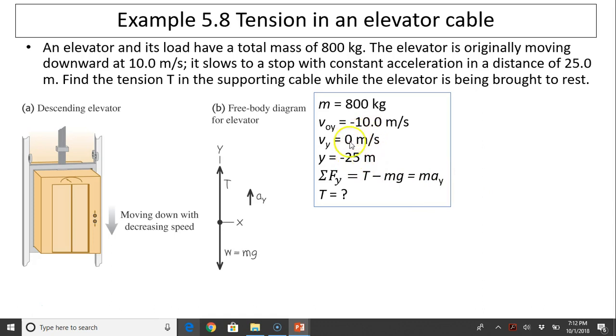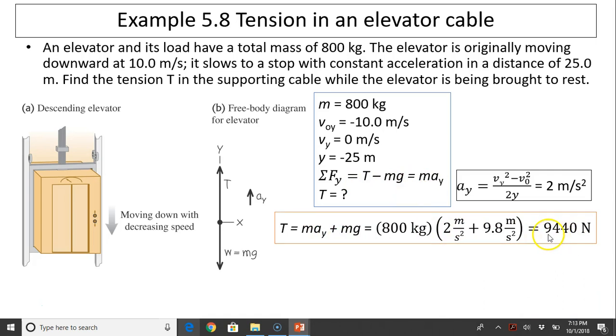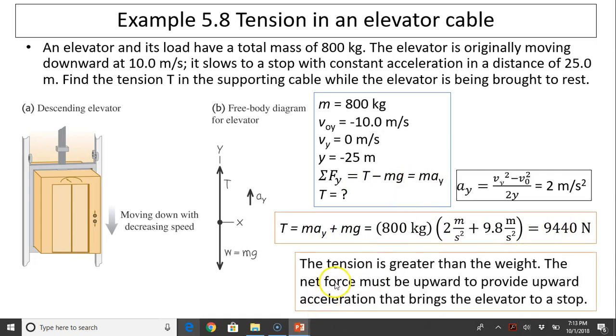So we can find Ay from this equation. From the given variables, Ay equals Vy squared minus V0y squared divided by 2y. Substitute all the numbers in, you'll have 2 meters per second squared. Finally, substitute into T minus Mg equals mAy. You'll have T equals 9,440 newtons. So the tension is greater than the weight. Let's see, weight is about 8,000 newtons. Is the tension supposed to be greater than the weight? Yes, the net force must be upward to provide upward acceleration that brings the elevator to a stop. That does make sense.